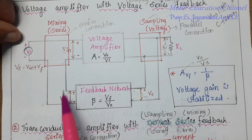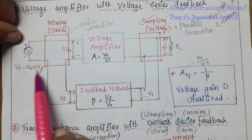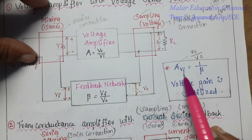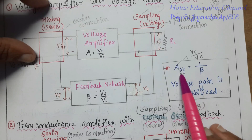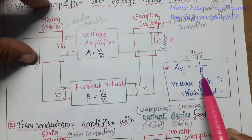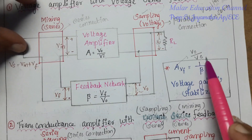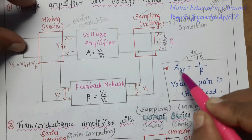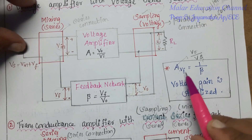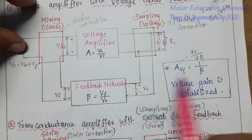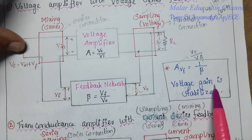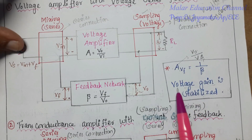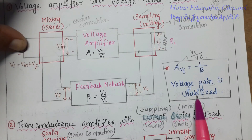Source voltage Vs is the combination of input voltage and feedback voltage: Vs = Vin + Vf. The closed-loop voltage gain Avf = 1/beta. Here the voltage gain is stabilized - the main aim of the feedback amplifier is stabilization, so this topology maintains voltage gain stabilization.